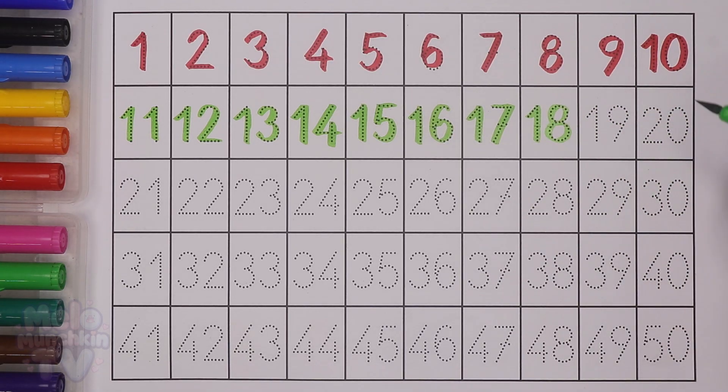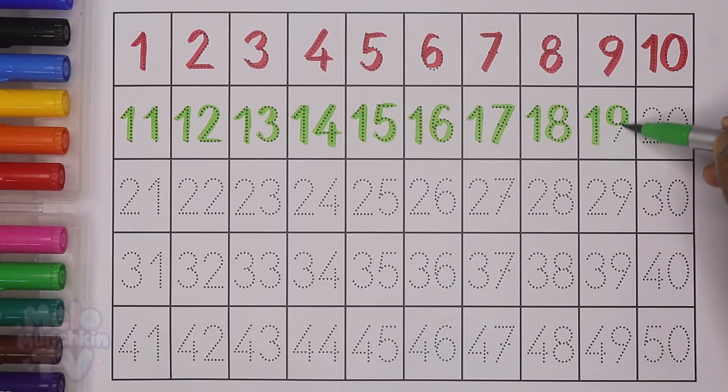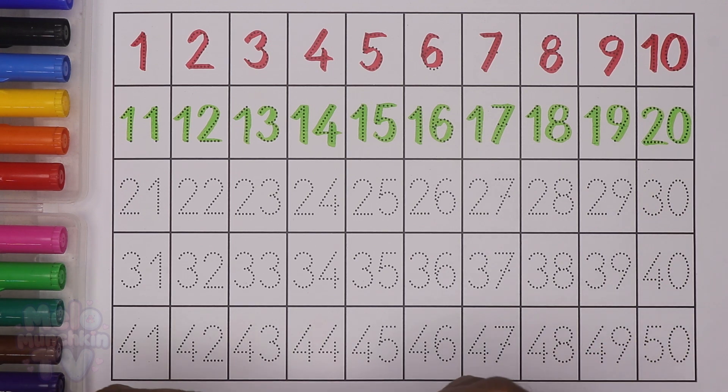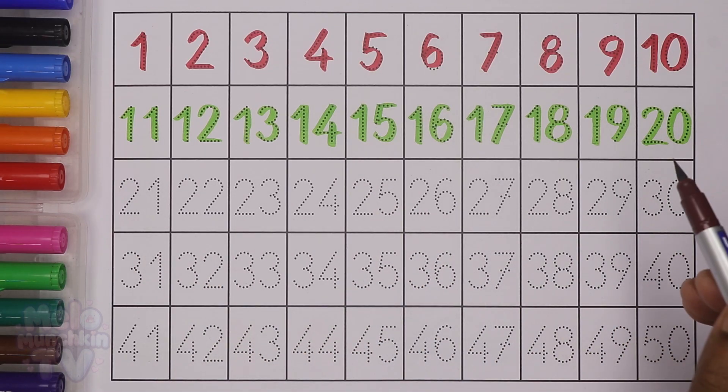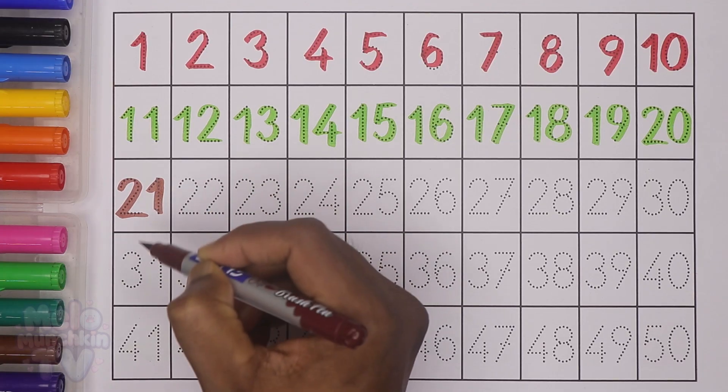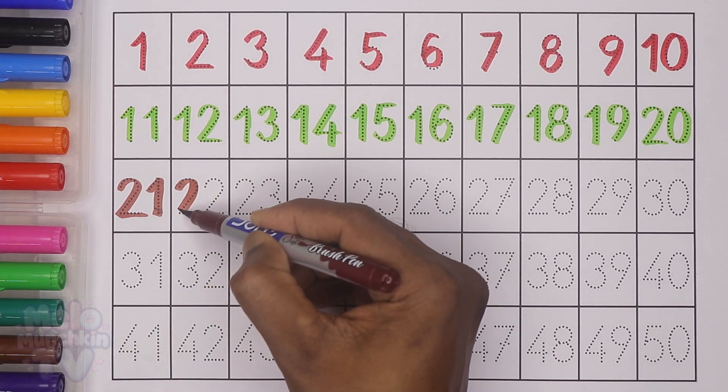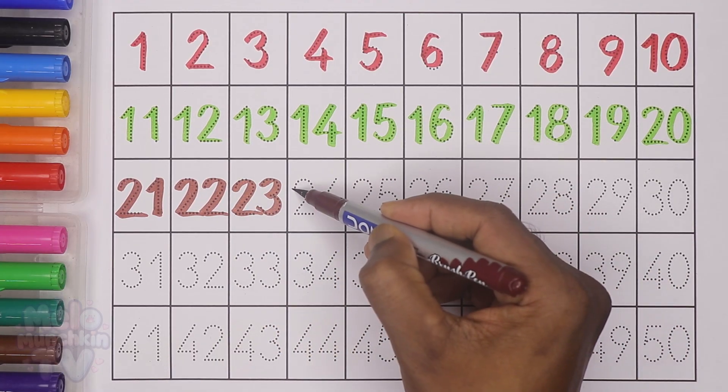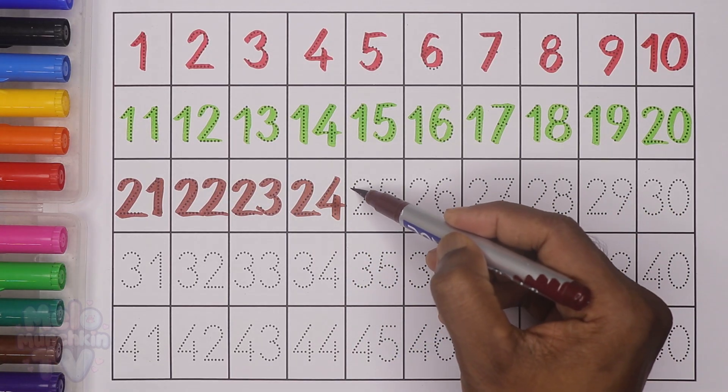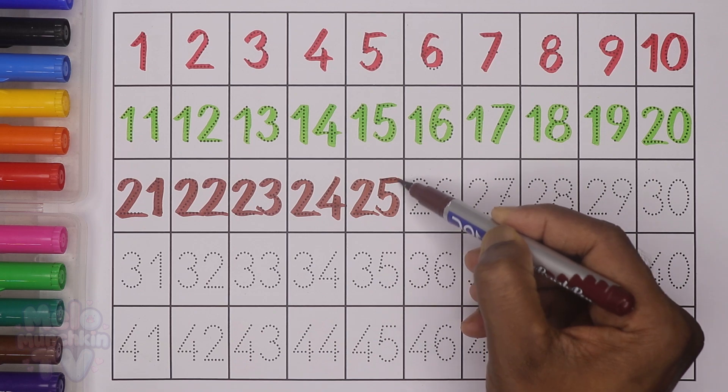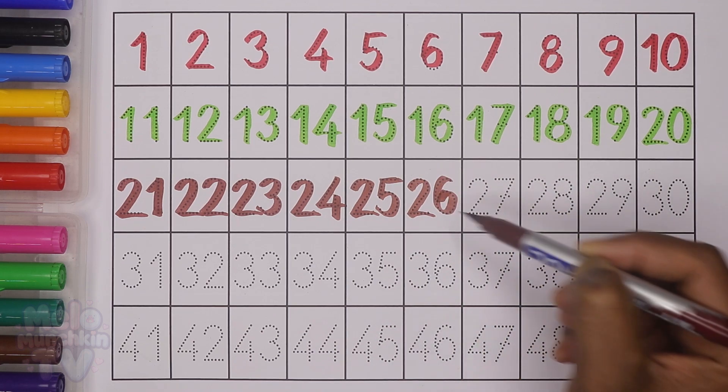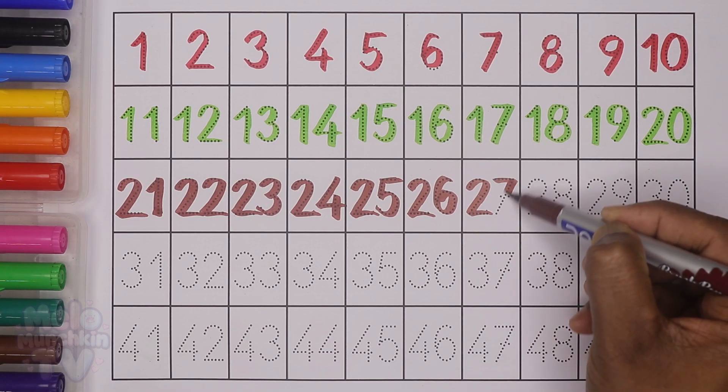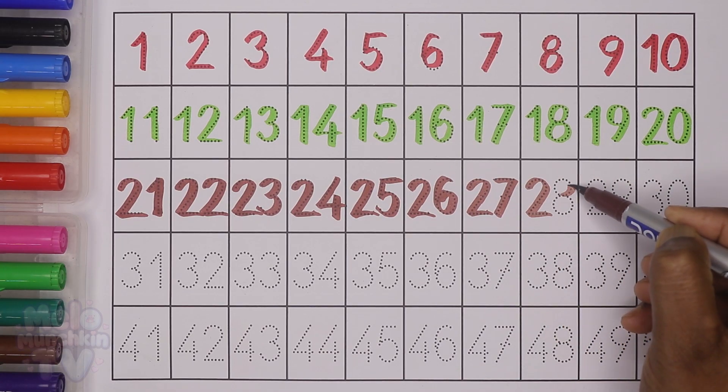Next I'll choose brown color and write the third line. After 20: 21 twenty-one, 22 twenty-two, 23 twenty-three, 24 twenty-four, 25 twenty-five, 26 twenty-six, 27 twenty-seven, 28 twenty-eight, 29 twenty-nine, 30 thirty.